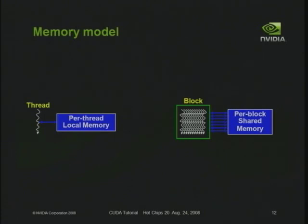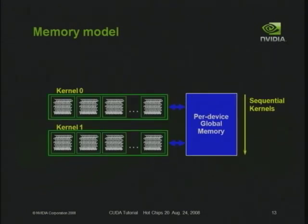The third abstraction is the memory model — a fairly standard shared memory model. Each level of the thread hierarchy has a corresponding memory space. Every thread has its own per-thread local memory — normally registers, but possibly private memory in DRAM if the register file isn't big enough. A thread block has a private per-block shared memory accessible to all its threads. And there's global memory that all threads of a kernel can see and each successive kernel can see — on a GPU, this is the DRAM on the GPU device.